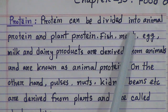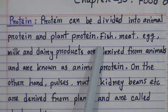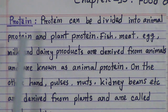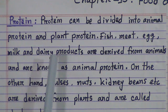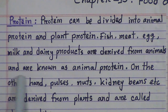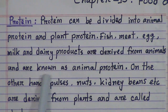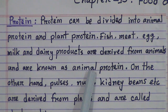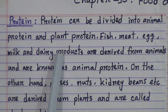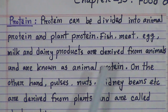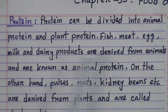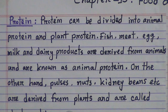Protein can be divided into two groups: animal protein and plant protein. Fish, meat, egg, milk and dairy products are derived from animals and are known as animal protein. On the other hand, pulses, nuts, kidney beans etc. are derived from plants and this is called plant protein.